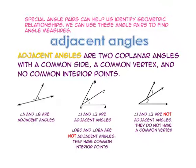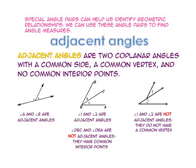Adjacent angles are two coplanar angles with a common side, a common vertex, and no common interior points. Look at angle A and angle B — they share a common side and a common vertex but do not have common interior points.